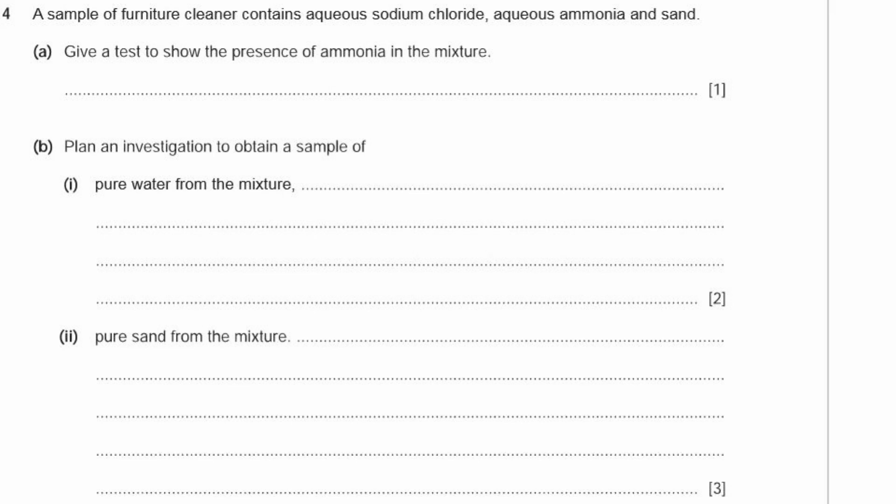Question 4. A sample of furniture cleaner contains aqueous sodium chloride, aqueous ammonia, and sand. A. Give a test to show the presence of ammonia in the mixture. Ammonia turns red litmus blue. You shouldn't really use the smell test because yes, you can smell ammonia, but it might get confused with other chemicals. And it's a very strong smell, so it's safer to use litmus rather than take a big waft of the smell.